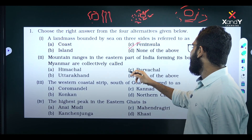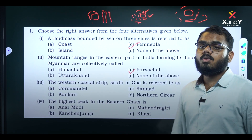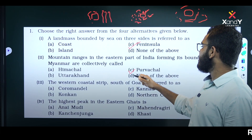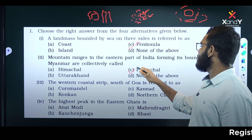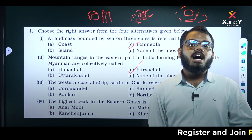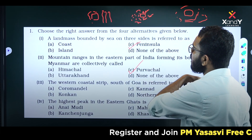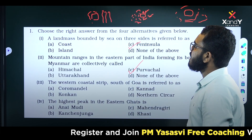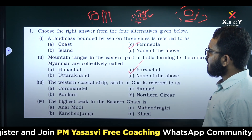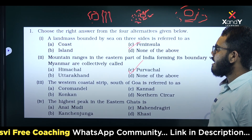If you comment here — yes, Option C, Purwajal. Option C, Purwajal. Purwajal is the name of these mountain ranges. Option C — correct. The answer is correct.